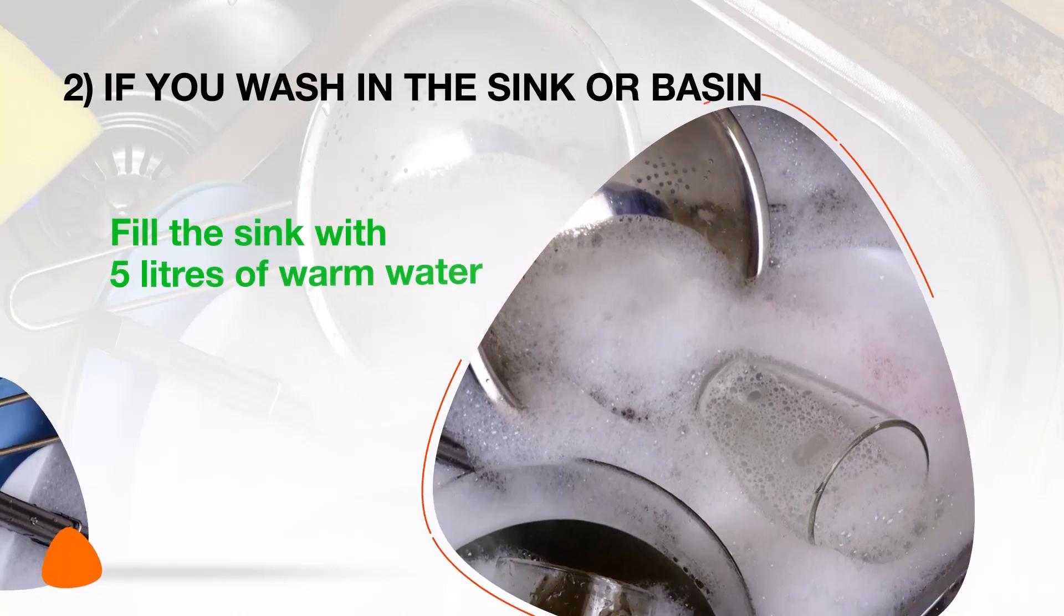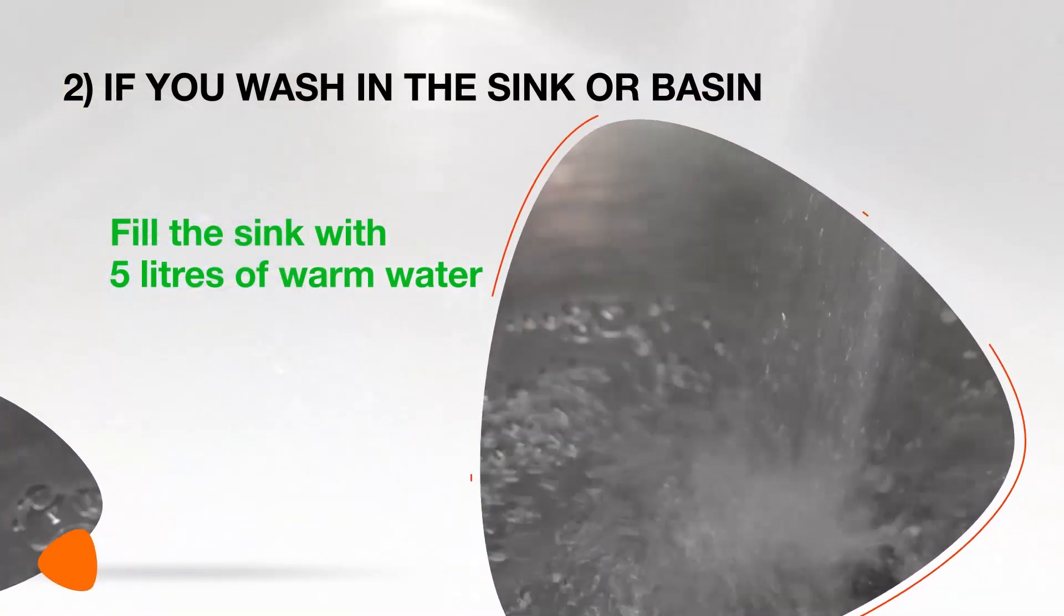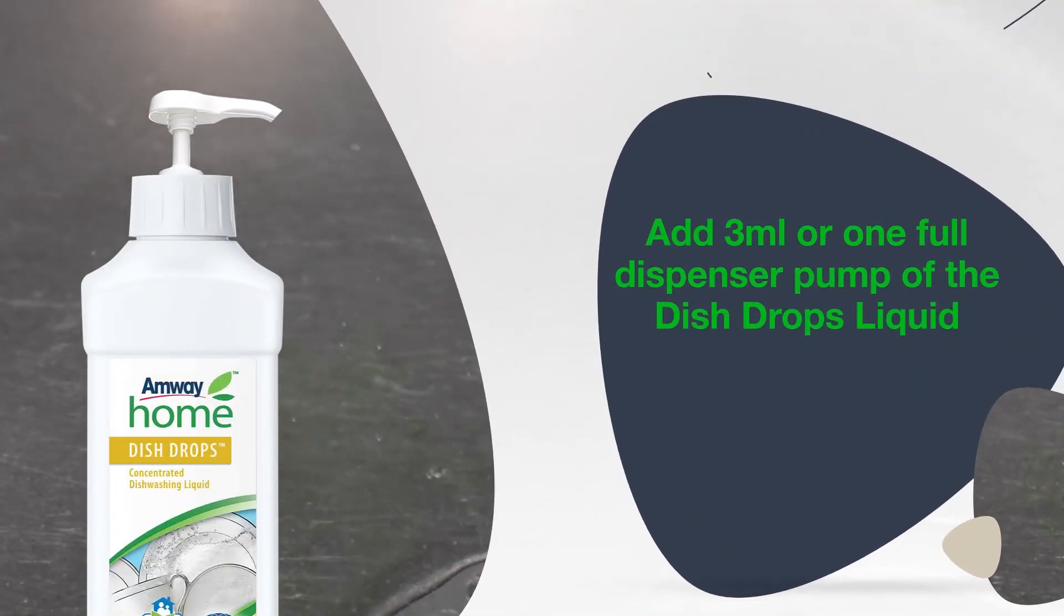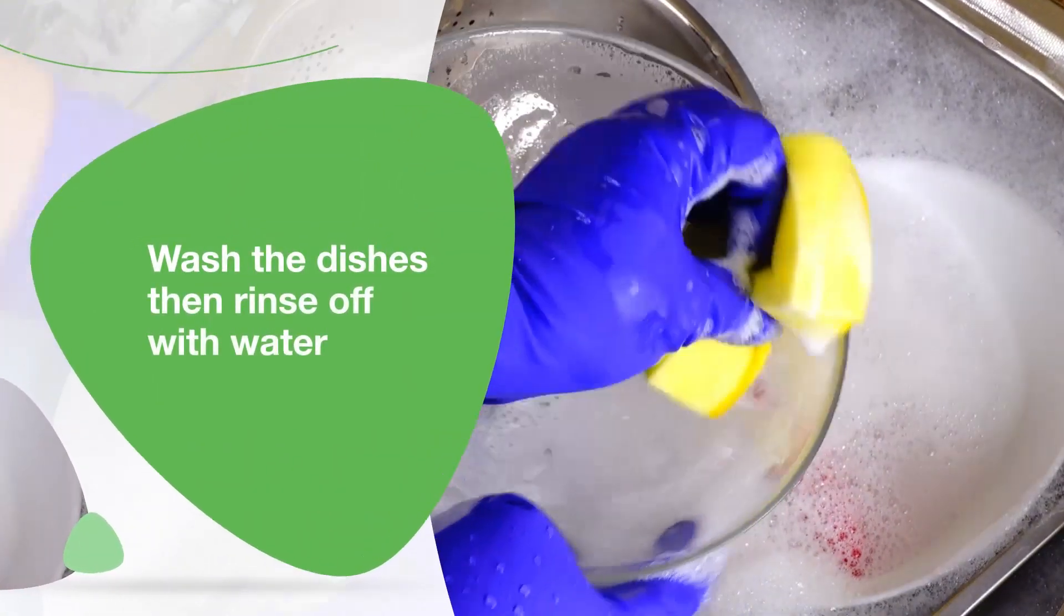If you wash in the sink or basin, fill the sink with 5 liters of warm water. Add 3 milliliters or one full dispenser pump of the Dish Drops Liquid. Wash the dishes, then rinse off with water.